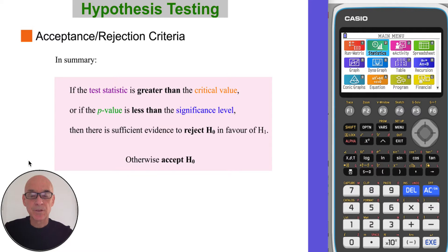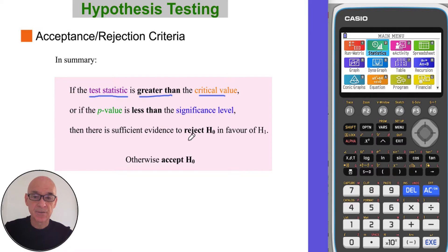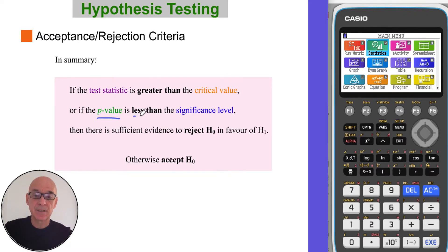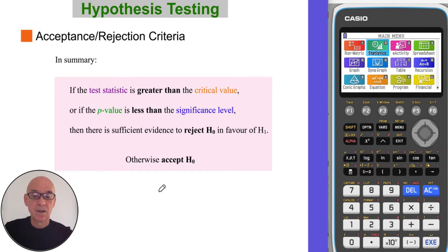To remind you of step five, the acceptance and rejection criteria: if the test statistic is greater than the critical value, then there's sufficient evidence to reject the null hypothesis. Likewise, if the p-value is less than the significance level, there is sufficient evidence to reject the null hypothesis. Otherwise, we accept the null hypothesis.